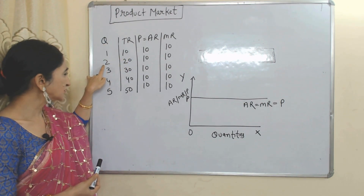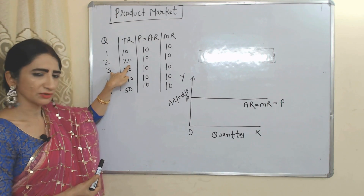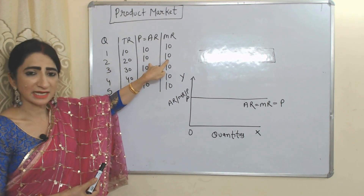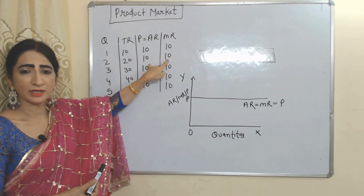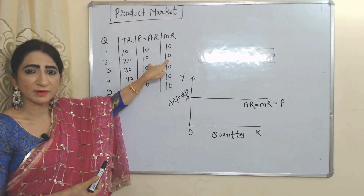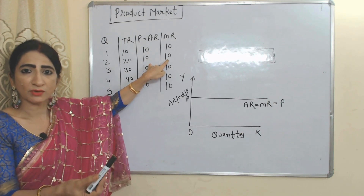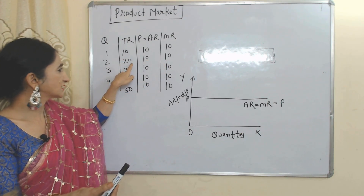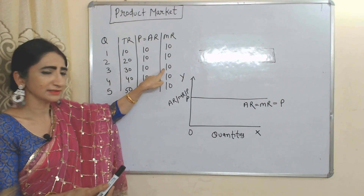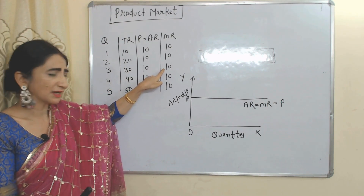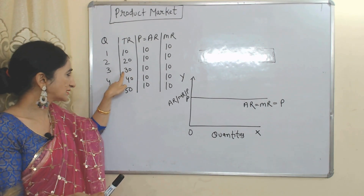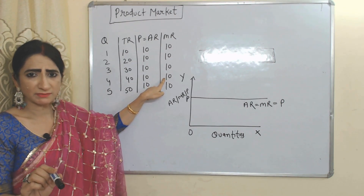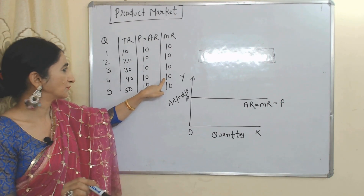Initially total revenue is 10. At the second unit, total revenue is 20; 20 minus 10 equals 10 — this is the change in total revenue by selling one more additional unit. Similarly, 30 minus 20 equals 10, this will be called marginal revenue. 40 minus 30 equals 10, this 10 will be called our marginal revenue.